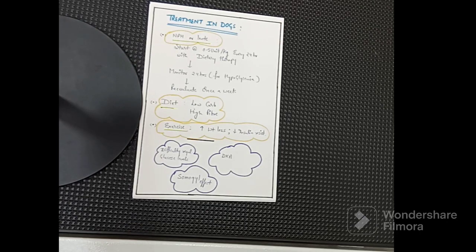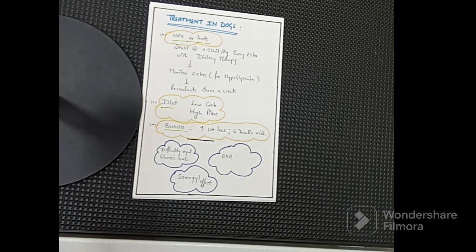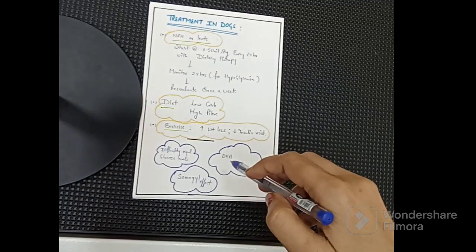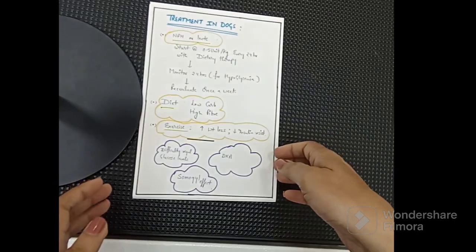This covers most of diabetes mellitus. In the next video we will discuss difficulty in regulating blood glucose, diabetic ketoacidosis treatment, and the Somogyi effect — all very important for NAVLE. Hope this is helpful; please focus on the points discussed today.